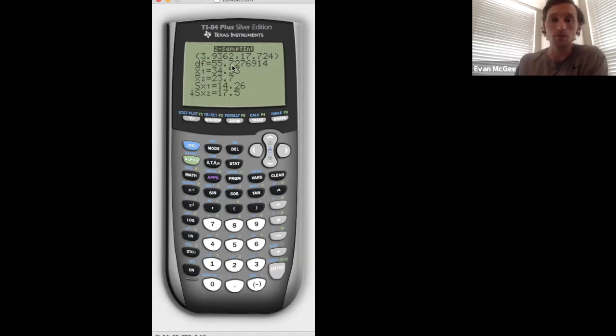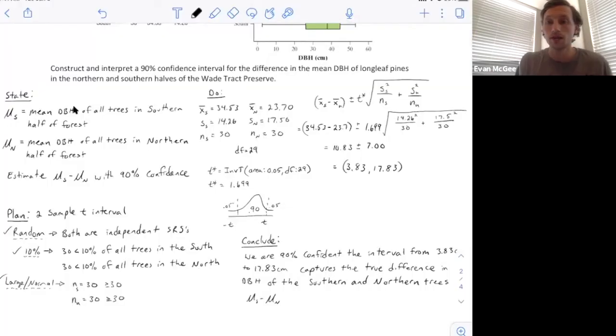Moving forward, instead of using degrees of freedom as n-1, you can type it into your calculator and it will give you the degrees of freedom, which you can copy into the Do section of your notes or any problem you're doing. I recommend using your calculator. When you find the interval on your calculator, write it down and make sure you copy down the correct degrees of freedom based on what you're calculating.